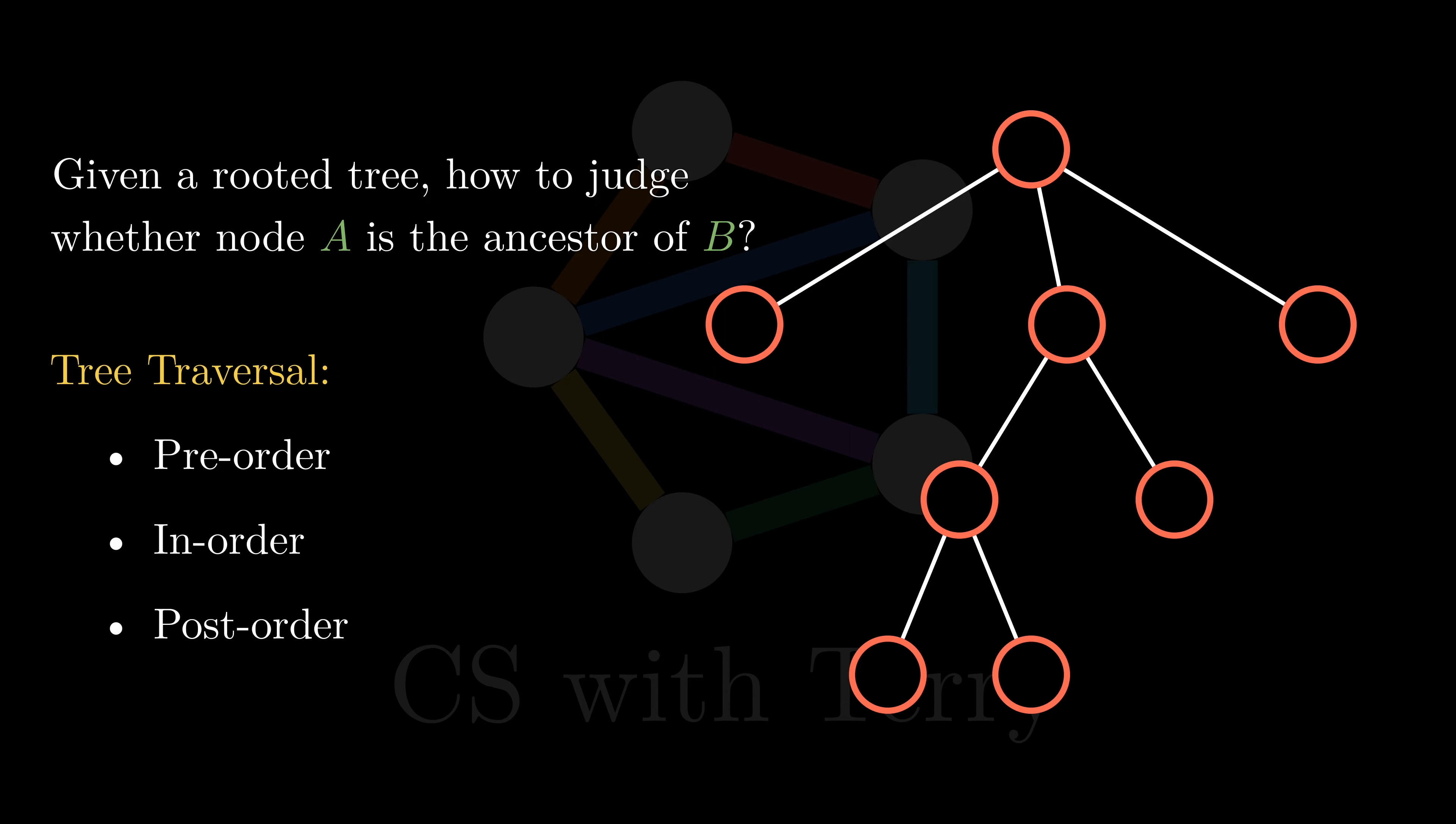Maybe you have learned about tree traversal, such as pre-order traversal, in-order traversal, and post-order traversal. By traversing the tree, we can assign the nodes some kind of order. Among the three traversal methods, in-order traversal is not suitable for this problem, because it only applies to binary trees, and our tree can be more than binary. Let's look at pre-order traversal first.